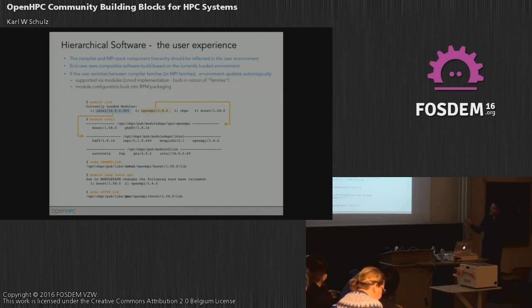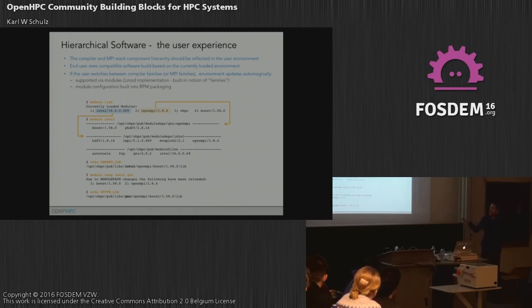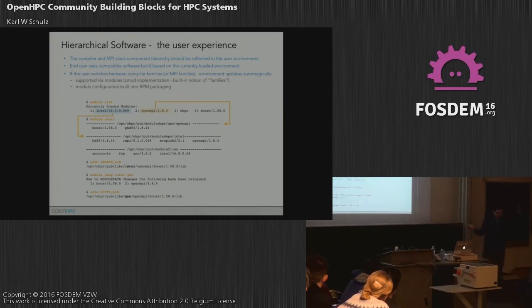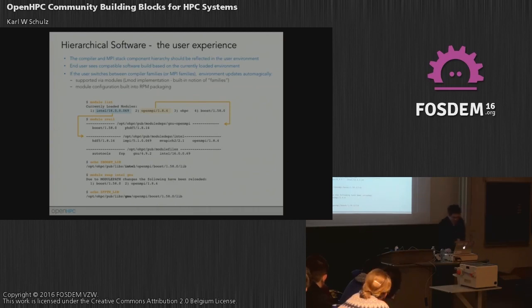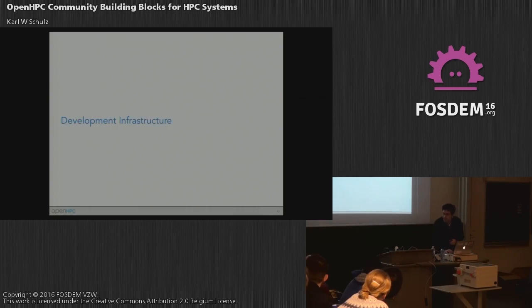Imagine a default OpenHPC install where you have an Intel compiler and OpenMPI stack loaded, plus Boost. When you echo an environment variable, it points to the Intel compiler and OpenMPI version because that's what you have loaded. But if you want to change your environment, you can very easily swap from one compiler toolchain to another. When I swap from Intel to GNU, LMOD under the covers takes care of all of that complexity for you — it automatically updates to use the GNU compiler format.